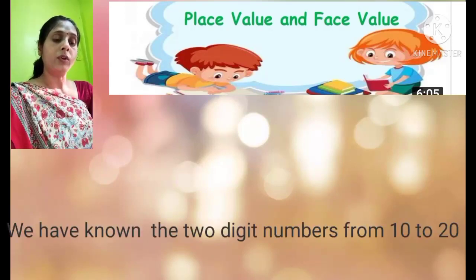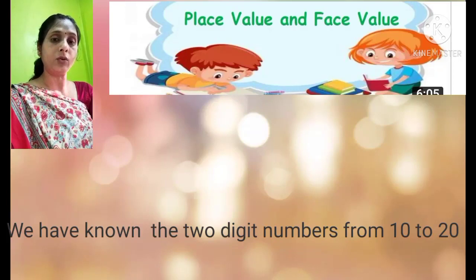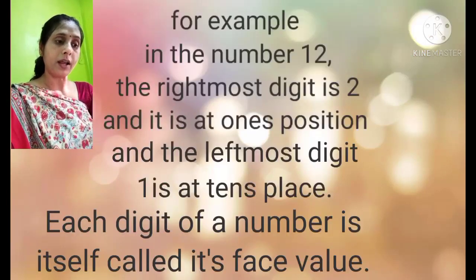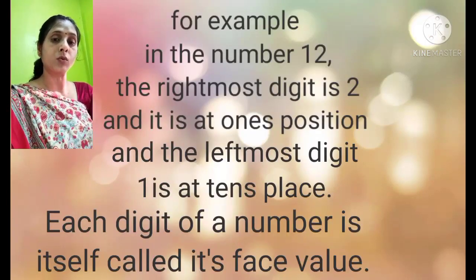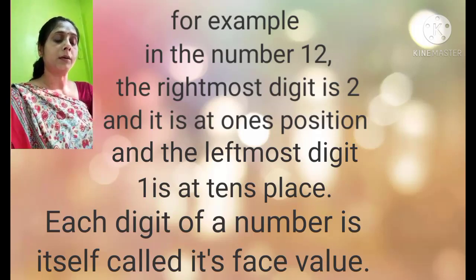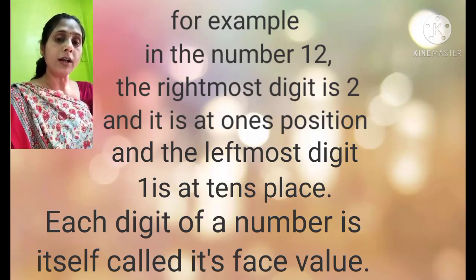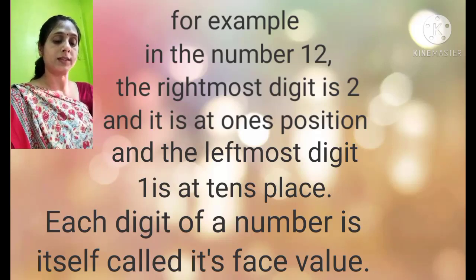We have known the two digit numbers from 10 to 20. Each digit of a number has its own place. For example, in the number 12, the rightmost digit 2 is in the 1's place and the leftmost digit 1 is in the 10's place.